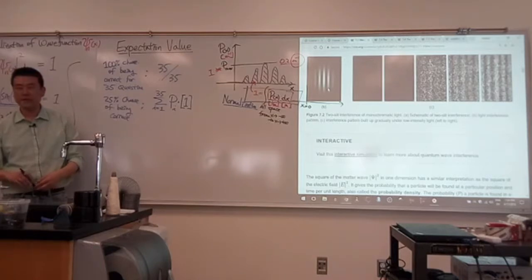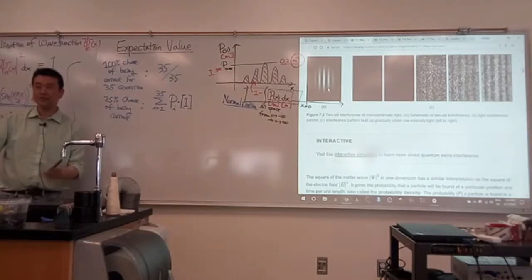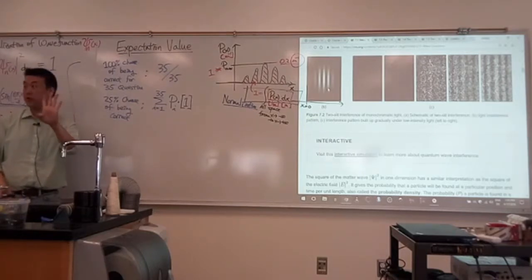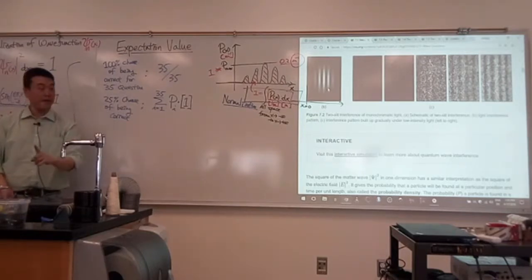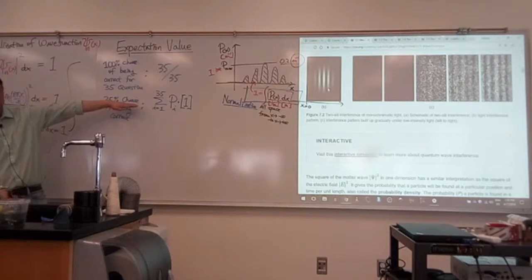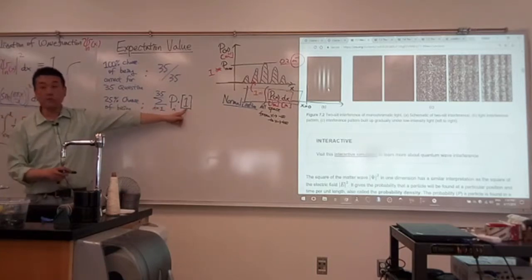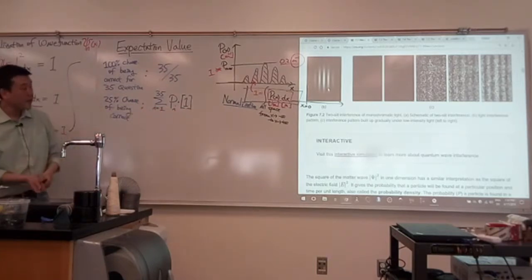I probably should have used the example of SAT, but I don't think SAT does this anymore. SAT exam used to take points off for the questions you attempt to answer and then you get wrong. Do people remember that? Yeah, they used to do that. For a multiple choice question of four choices, for every wrong answer, they would take a third of the points off. And their reasoning was this kind of expectation value calculation.